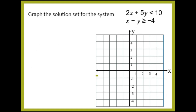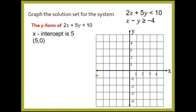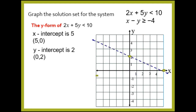Now let's graph the solution set. For 2x + 5y < 10, the x-intercept is 5 — ordered pair (5, 0) — and the y-intercept is 2 — ordered pair (0, 2). Draw a dotted line through these points. Since the test point (0, 0) gave a true statement, the shaded region is below the line. This is the graph for 2x + 5y < 10.